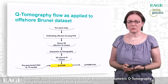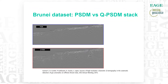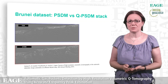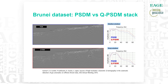Let's check the effect of the volumetric Q on the imaging. Here are the PSDM and Q-PSDM stacks with true amplitude. We can see that the amplitude is more balanced after Q-PSDM between the shallow and deep parts of the section. This is confirmed by the spectra: the high frequencies are recovered quite well and Q-PSDM broadens the spectrum.